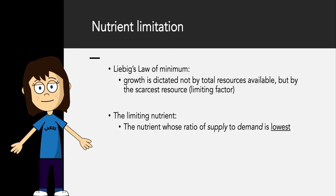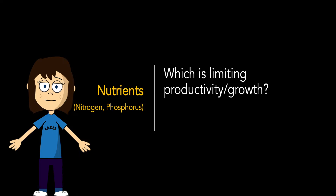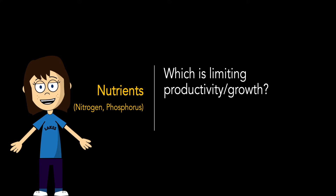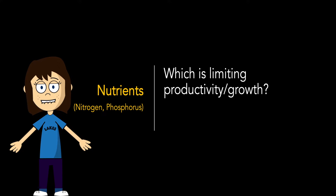Liebig's Law of the Minimum states that growth is dictated not by total resources available, but by the scarcest resources. Typically this is just one resource, one limiting factor, but you can have co-limitation. The limiting nutrient is the nutrient whose ratio of supply to demand is the lowest. In the case of lakes and algal growth, the nutrients limiting productivity and growth are mostly the macronutrients nitrogen and phosphorus, though micronutrients can also in some cases be important.